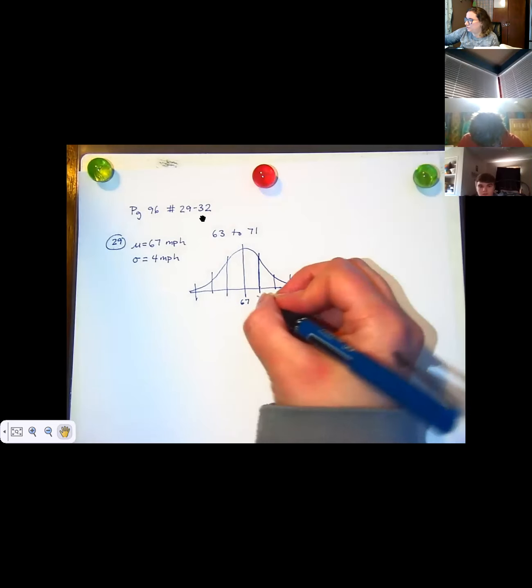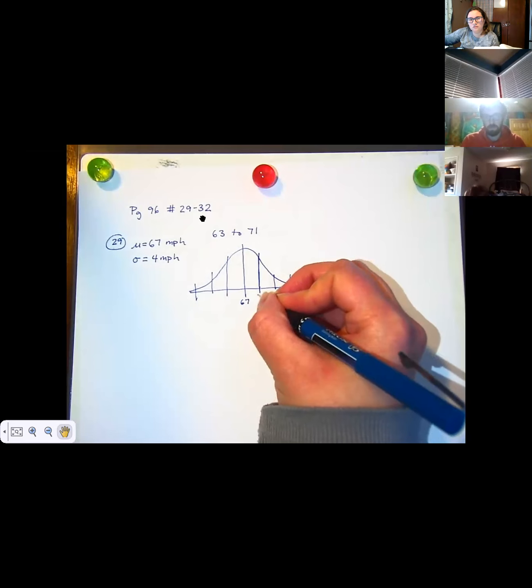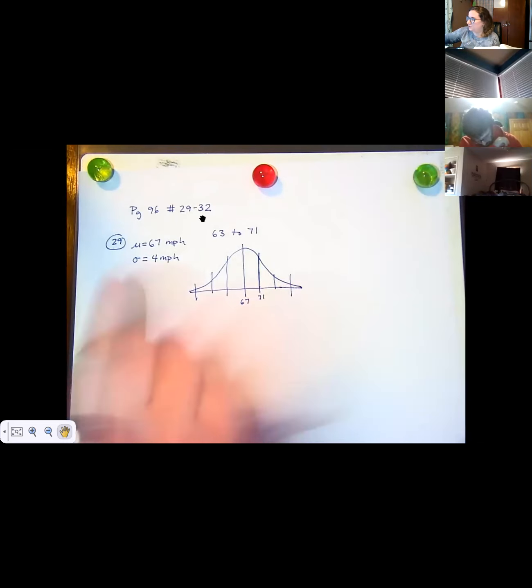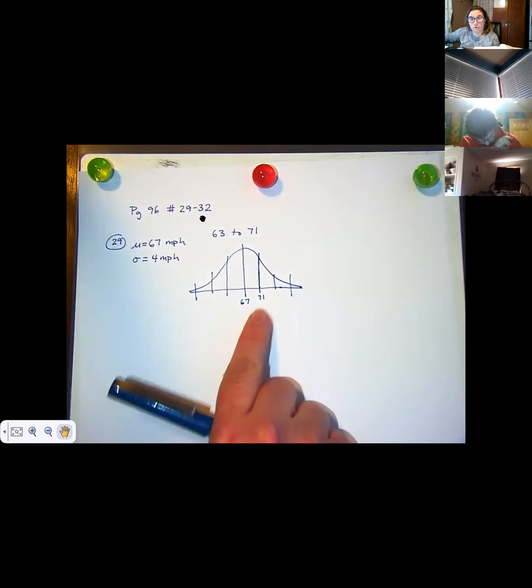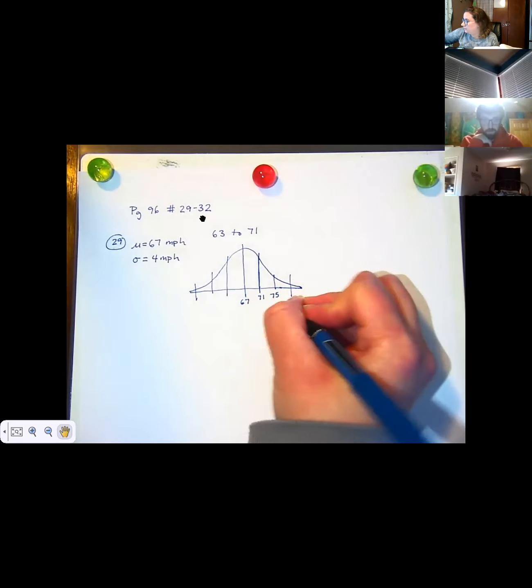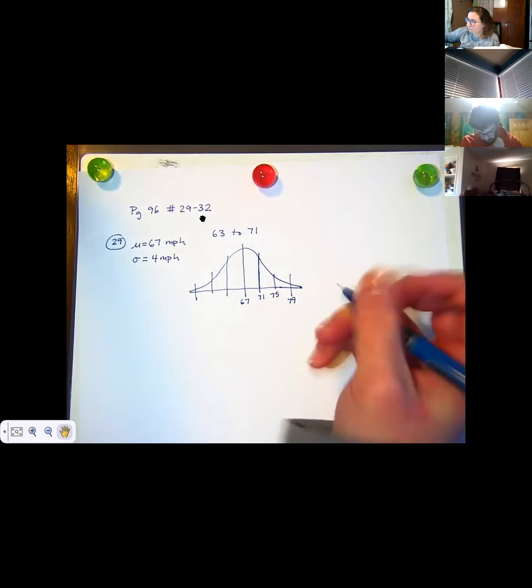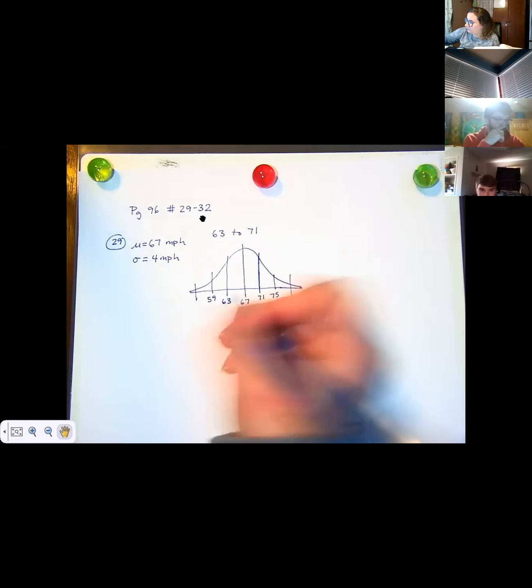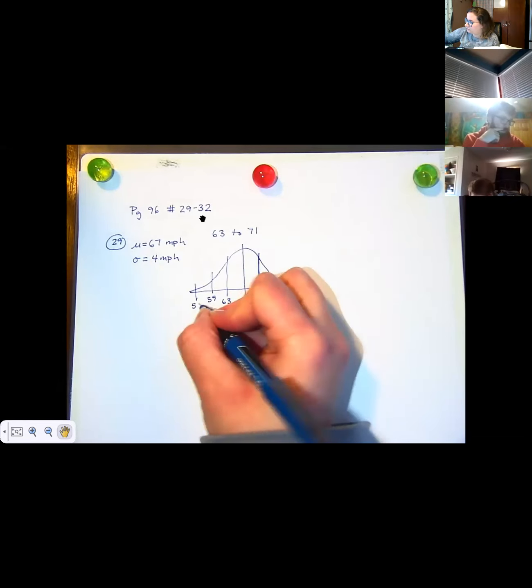Does anybody know what I should put for this number right here? One standard deviation away. Yeah, you're right. What is it? 71. Yeah, 71 because the standard deviations for so it's like I'm adding four, right. If I was going to keep going, I would say, oh, this is 75. And this is 79. And then over here on this side, I'm going to start subtracting four. So this is 63. This is 59. And this is 55.